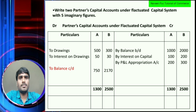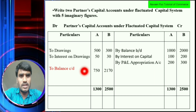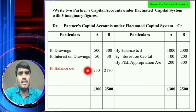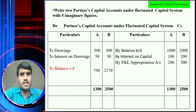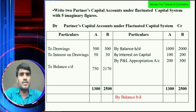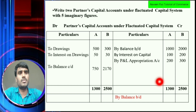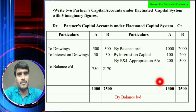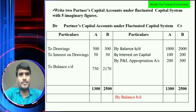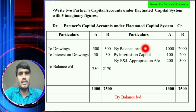The balance is Rs. 2,000 — this is the closing capital. Closing capital is carried down to next year, next month, next quarter. Balance brought down: the closing capital is Rs. 2,000. Closing capital for Partner A: Rs. 1,000; Partner B: Rs. 3,000.